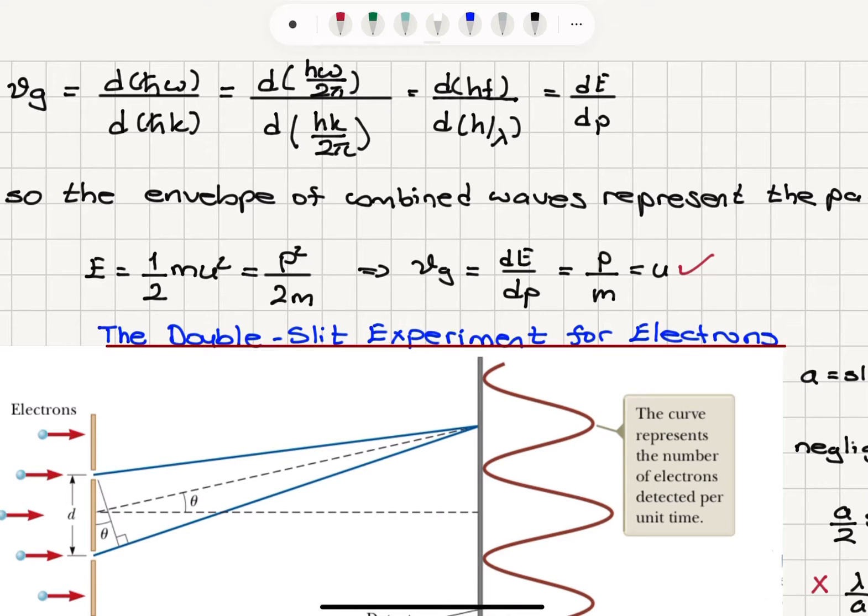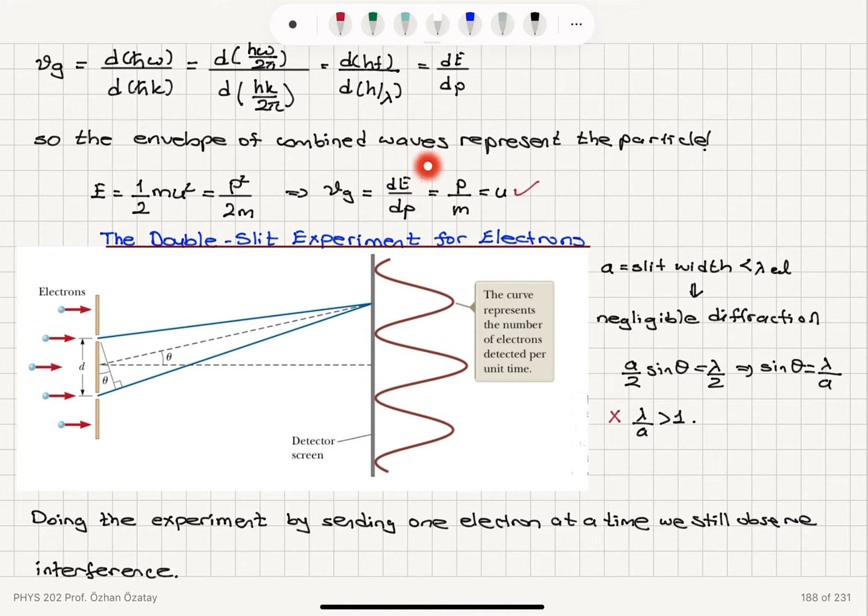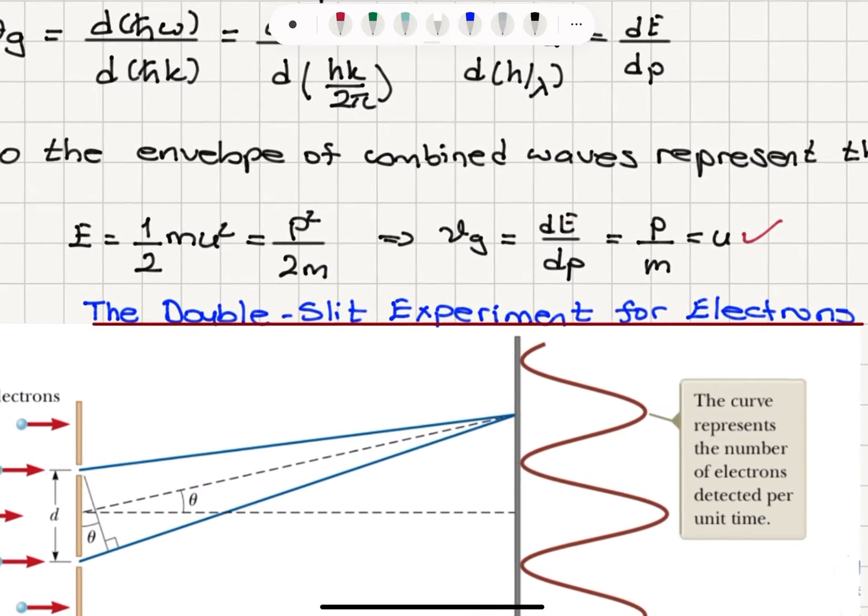So what we see is that the envelope of combined waves represents the particle. Basically, if we take a derivative of its energy with respect to momentum, we get the group velocity and therefore the envelope represents the particle.